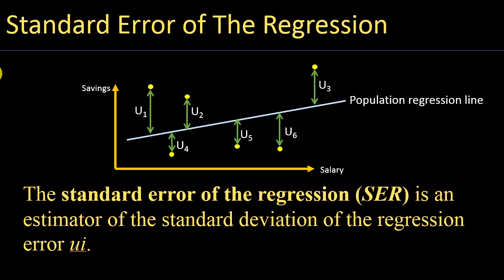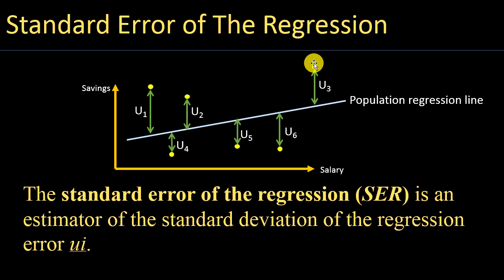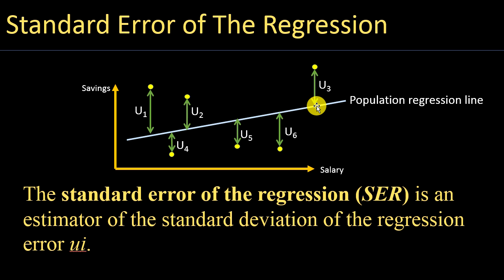We are going to look at what we mean by the standard error of the regression. In linear regression, the standard error of the regression tells us how spread each observation is from the regression line. When we draw the linear regression line, or the line of best fit, it is only an approximation of the actual observations.